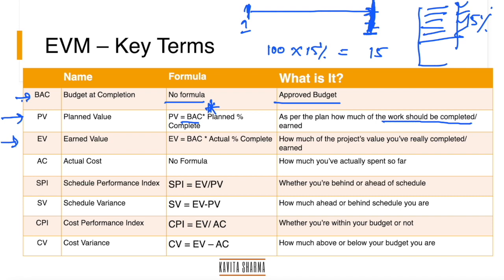Earned Value is how much work you have really done — how much project value you have actually completed so far. On day seven, your team might have completed 10%, 20%, or exactly 15% as planned. It could be ahead, behind, or on track.